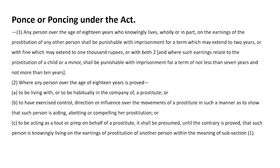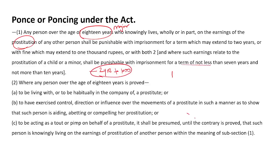Pouncing under the Act: any person over the age of eighteen years who knowingly lives wholly or in part on the earnings of prostitution shall be punishable with imprisonment which may extend to two years, or a fine which may extend to one thousand rupees, or both. If the person is a minor, they shall be punishable for a term not less than the prescribed minimum. If the earnings were made from a child or minor, the punishment shall be not less than seven years and not more than ten years.